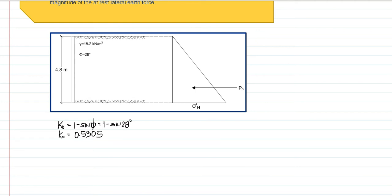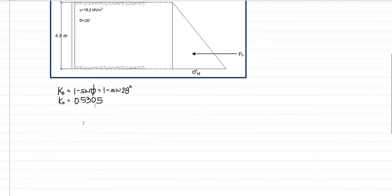So now we have an at rest earth pressure coefficient, we can now determine the at rest lateral earth pressure. So to determine the at rest lateral earth pressure, we just have sigma prime h, which is just equal to K O times gamma prime h.